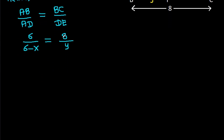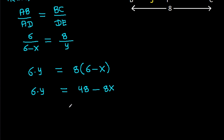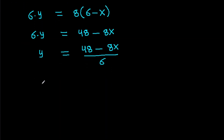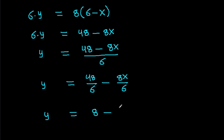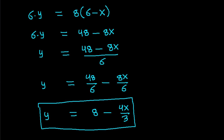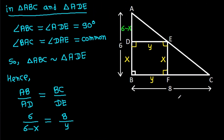If we cross multiply, then 6 times Y equals 8 times (6 minus X). So 6Y equals 48 minus 8X. Therefore, Y equals (48 minus 8X) over 6, which simplifies to Y equals 8 minus 4X over 3.